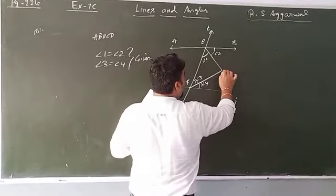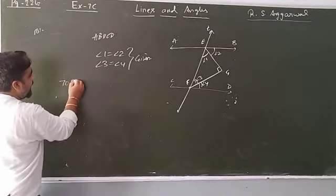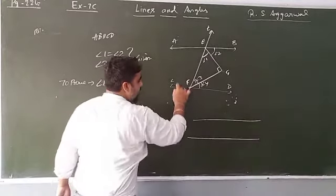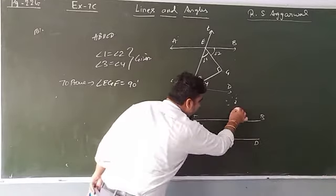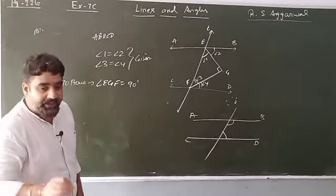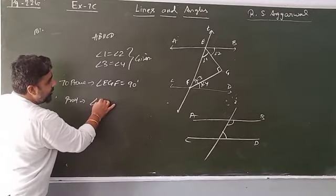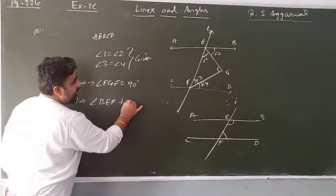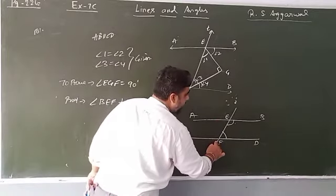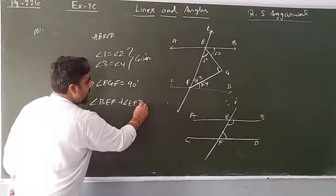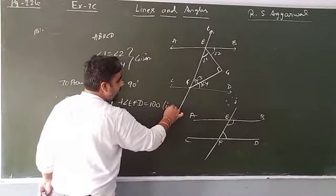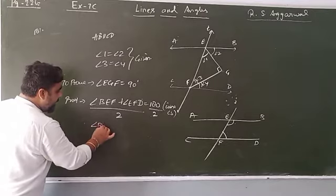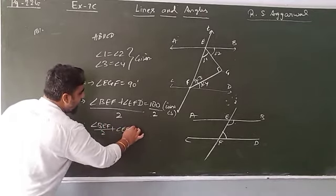We have to prove angle EGF equals 90 degrees. Since AB is parallel to CD, angle BEF plus angle EFD equals 180 degrees — co-interior angles are supplementary. Dividing both sides by 2: angle 1 plus angle 3 equals 90 degrees.